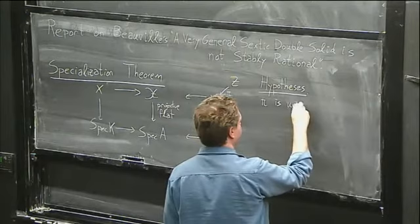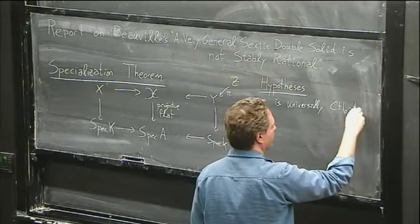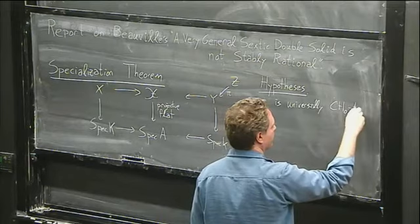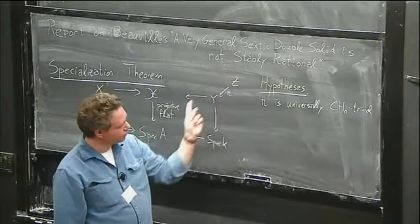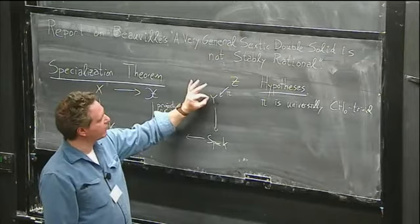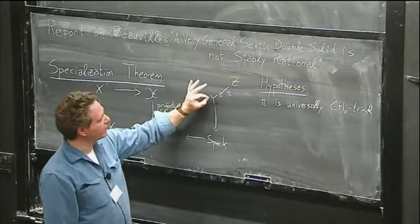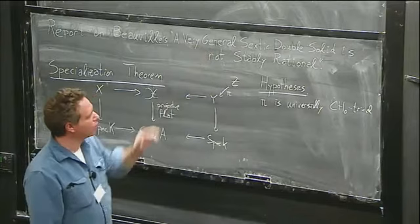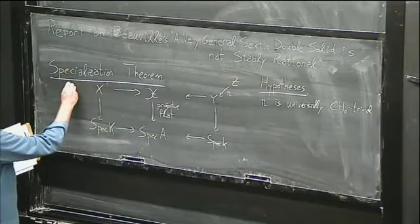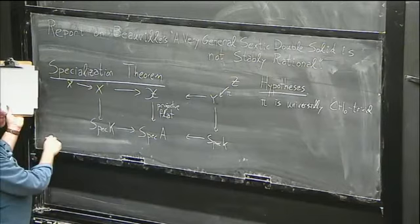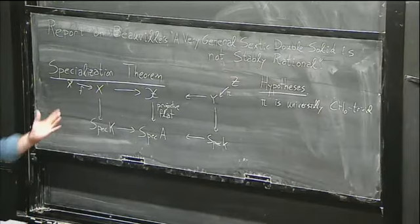The hypothesis is that π is universally Chow-zero trivial, which means that whenever you make any extension of the field, the induced push-forward map on Chow-zero is an isomorphism. You can check that on points of Y — for every point of Y, and for every field extension of the residue field, if you look at the fiber, you want the fiber to have Chow-zero trivial in the sense that the degree map is an isomorphism. This might also be singular, so you take a desingularization. There's no hypothesis on that one.